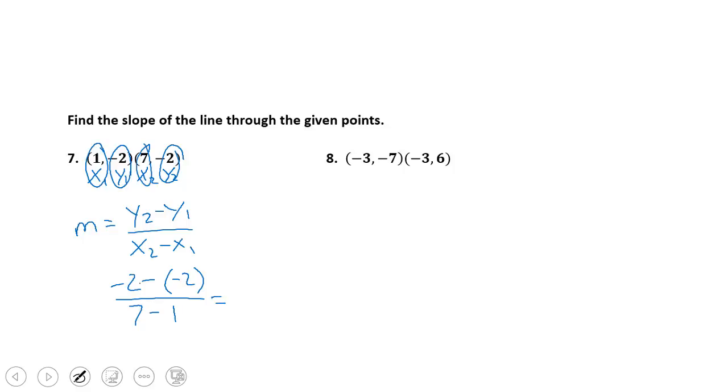When we do this, negative 2 minus 2 is equal to 0 over 7 minus 1 is equal to 6. So we have a 0 slope. Now notice, ladies and gentlemen, when we have a 0 slope, what did we notice? We have something that doesn't rise. It doesn't go up or down. The change in y is 0. In other words, the y-coordinate of negative 2, they're the same. If the y-coordinates are the same, we are going to have a horizontal line with a slope of 0.